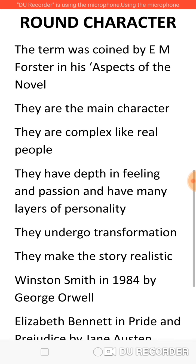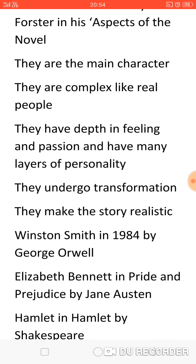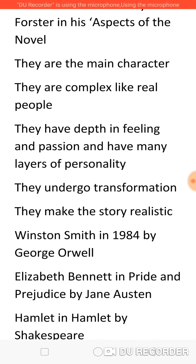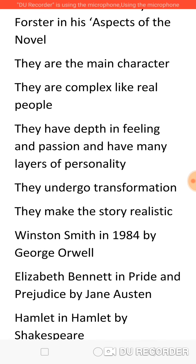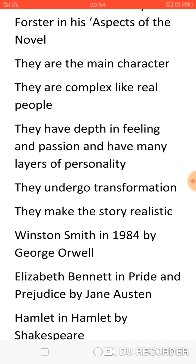Another example of the round character is Elizabeth Bennett in Pride and Prejudice by Jane Austen. Elizabeth Bennett is the main character and her behaviour has an impact on the people around her. In the beginning of the story she is shown as a very innocent girl who also has prejudice towards her hero, Mr. Darcy. But later on, as the story goes, she undergoes a change and her opinion and her feelings change. Therefore, we can say that Elizabeth Bennett is a wonderful example of a round character.